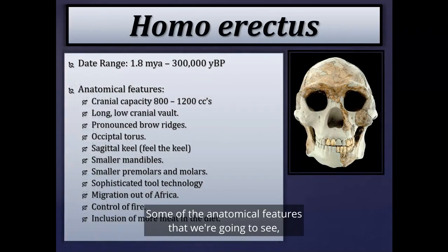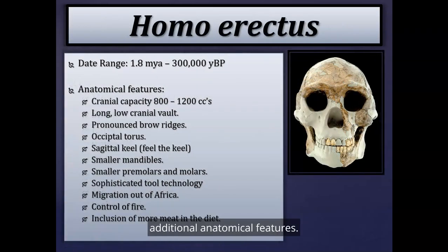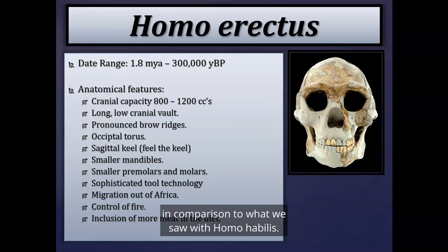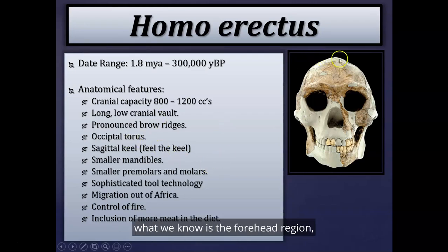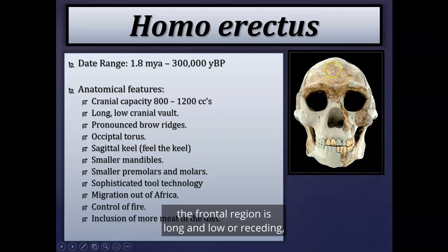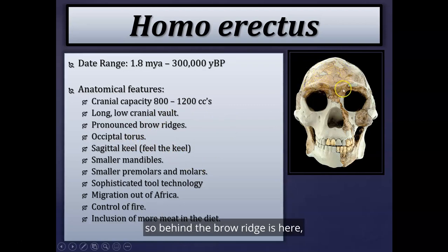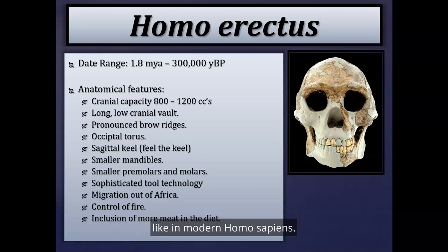We see a jump in cranial capacity compared to Homo habilis. The range for Homo erectus is about 800 to 1200 cc. The cranial vault's frontal region is long and low or receding — behind the brow ridges, it goes backward rather than vertical like in modern Homo sapiens.